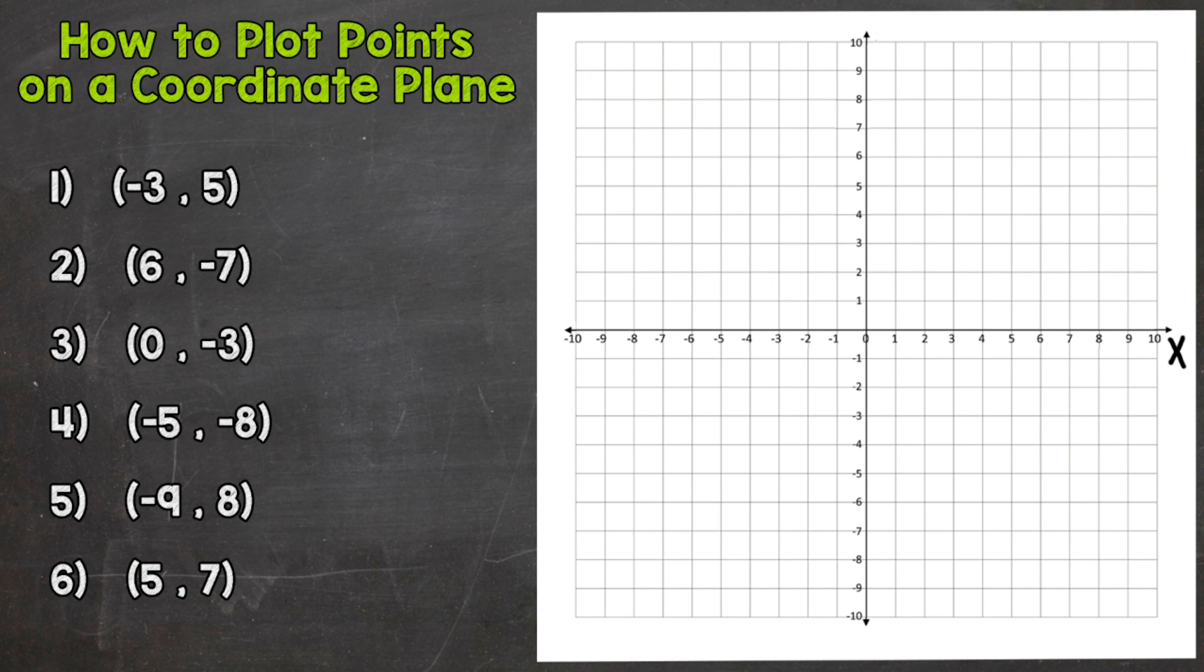Now the second thing we need to know is that the vertical or up and down axis is our y-axis and I'll label that one as well. So that will help us as we go through our six ordered pairs that we're going to plot.